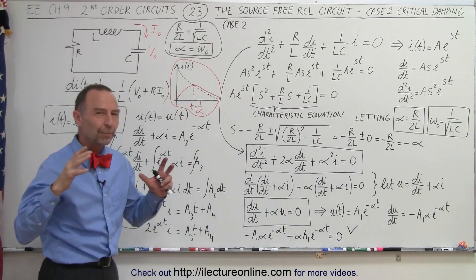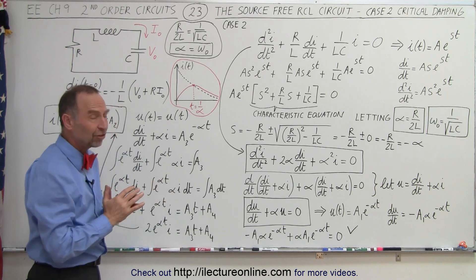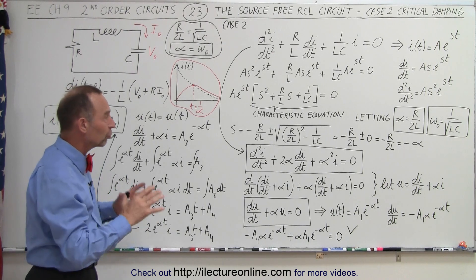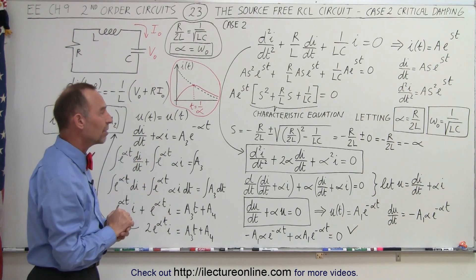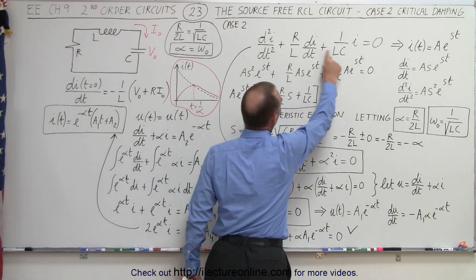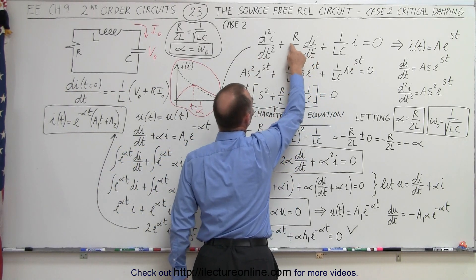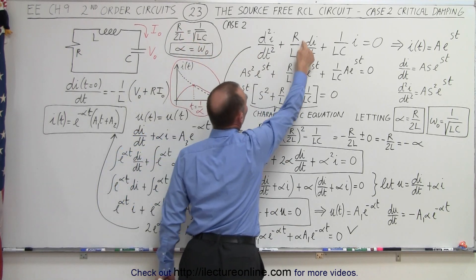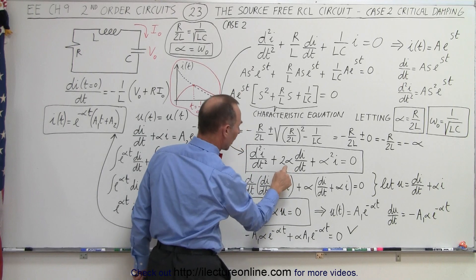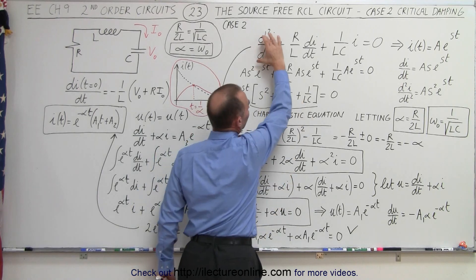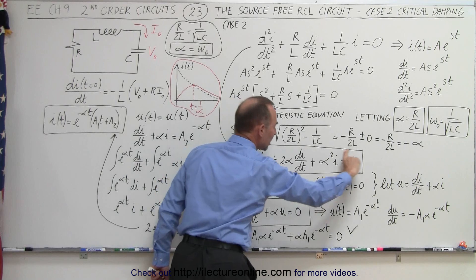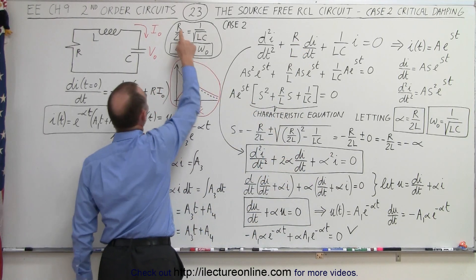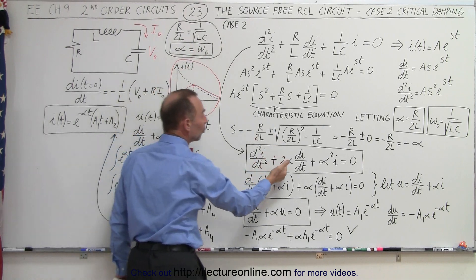But that doesn't give us the entire picture of the solution. We actually need to use a mathematical trick to come up with a better general solution for this particular case. We do that by taking the very same equation and realizing that R over L is twice R over 2L, so therefore this quantity can be replaced by 2 alpha. So I'm going to take this same differential equation and rewrite it, but instead of writing R over L, we write 2 alpha, because R over 2L equals alpha, and twice that means 2 alpha.